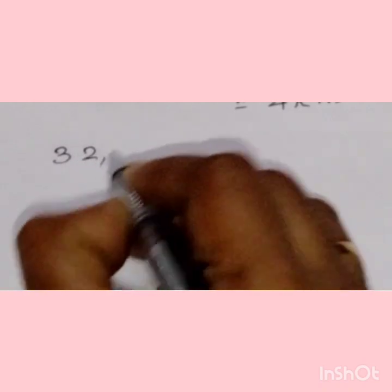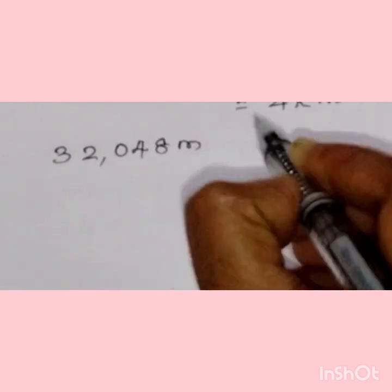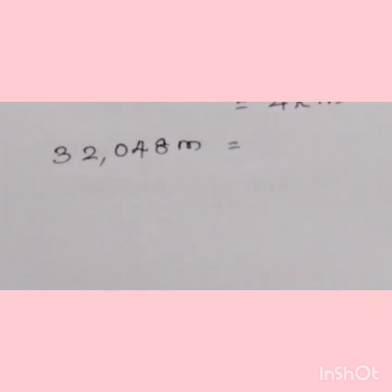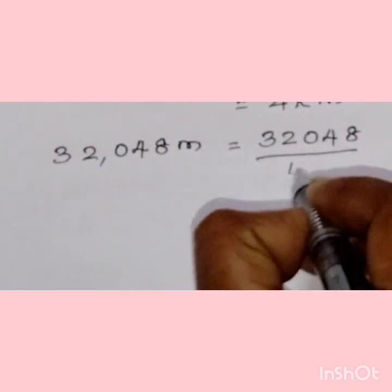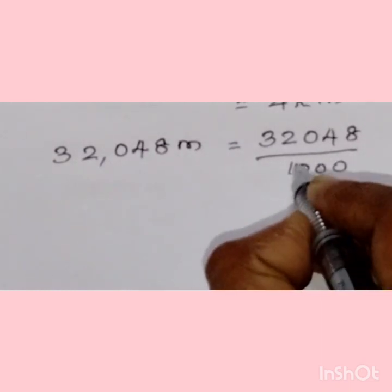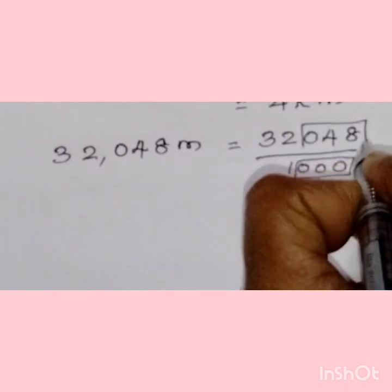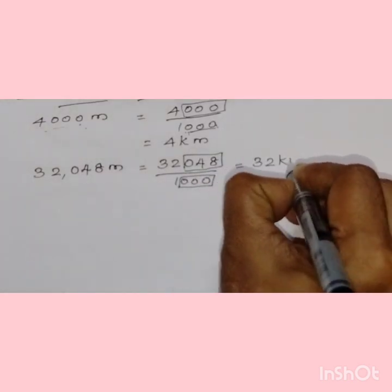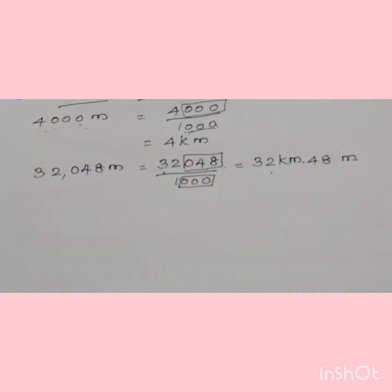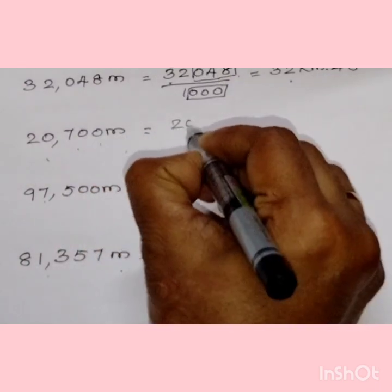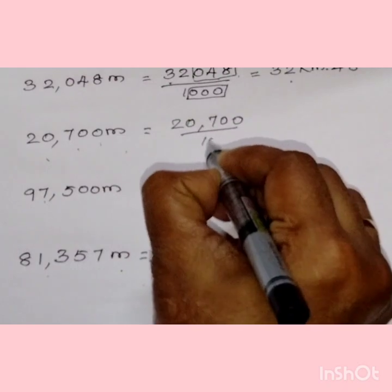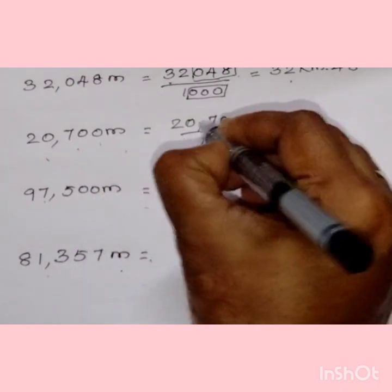Our next question is 32,048 meters. When dividing by 1000, the last three digits are the remainder. So 32,048 becomes 32 kilometers and 048 meters, which is 32 kilometers and 48 meters. Next: 20,700 meters — dividing by 1000 gives 20 kilometers and 700 meters.